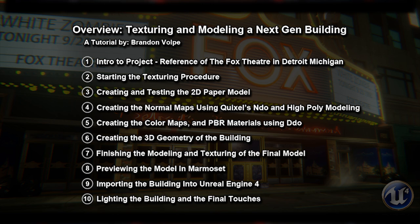The second chapter will be starting the texture procedure. The third lesson will create and test a 2D paper model, which is basically just a flat plain wall for each part of the building so we know our modular pieces fit together right. Then we'll be creating some normal maps using DDO and high-poly modeling, a mixture of both, and even some bitmap to normal scripts.